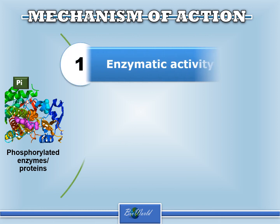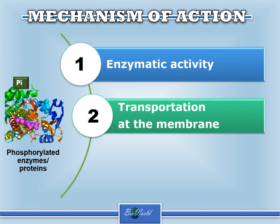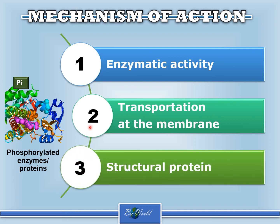For example, if the hormone is ADH — the antidiuretic hormone — then the activated enzyme or activated protein will function as a transport channel at the membrane of the nephron to reabsorb water. We also find that the activated enzyme or activated protein can become structural proteins. For example, growth hormones are peptide hormones required to build muscle in our body, so the activated protein will become a structural protein in the form of muscle.